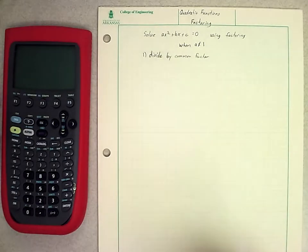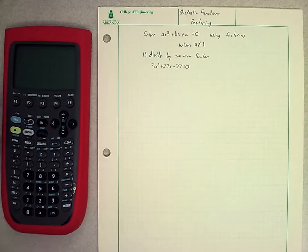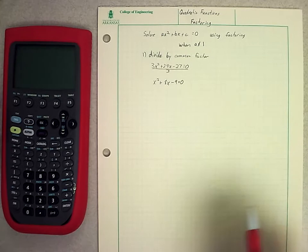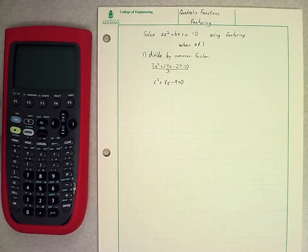The first thing we want to do with regard to that is divide out by a common factor. To give you an example of how this would work, given the problem 3x² + 24x - 27 = 0, I can see that all the coefficients are divisible by 3, so I can divide that entire equation by 3. When I divide by 3, I get x² + 8x - 9 = 0. Now it's back to the simple form of having a lead coefficient of 1, and I can factor and solve that quickly.